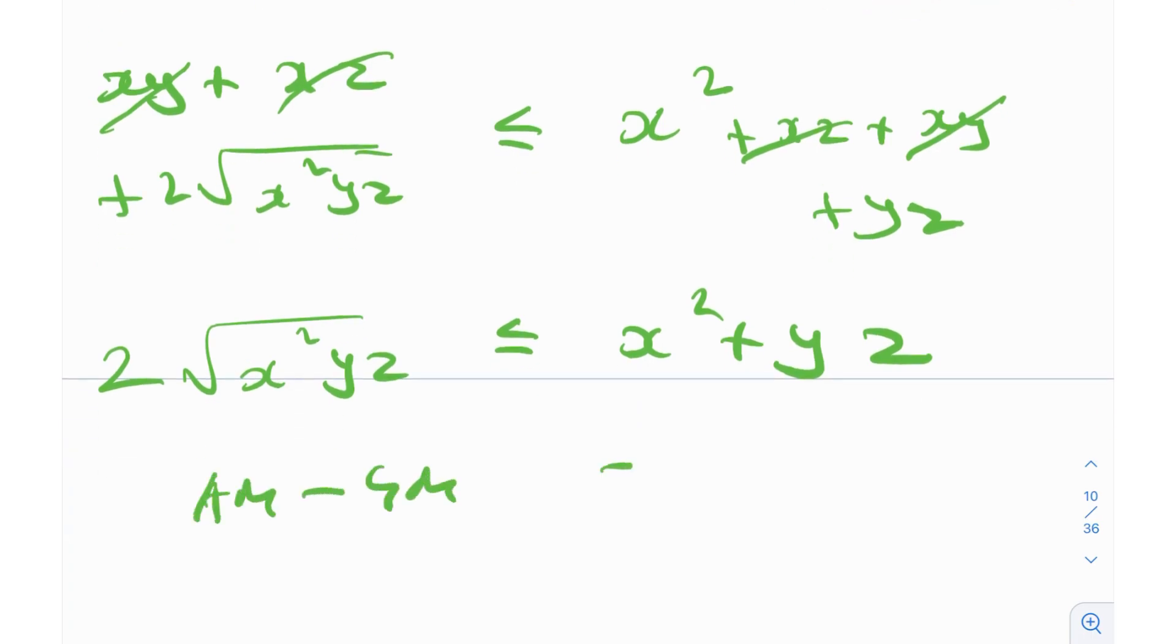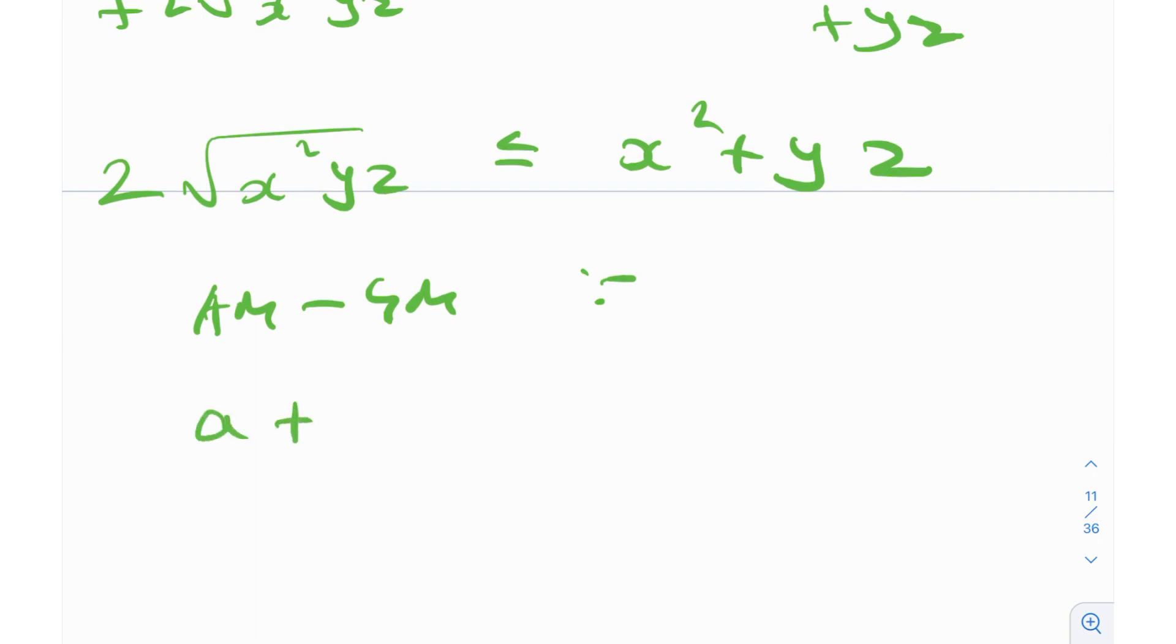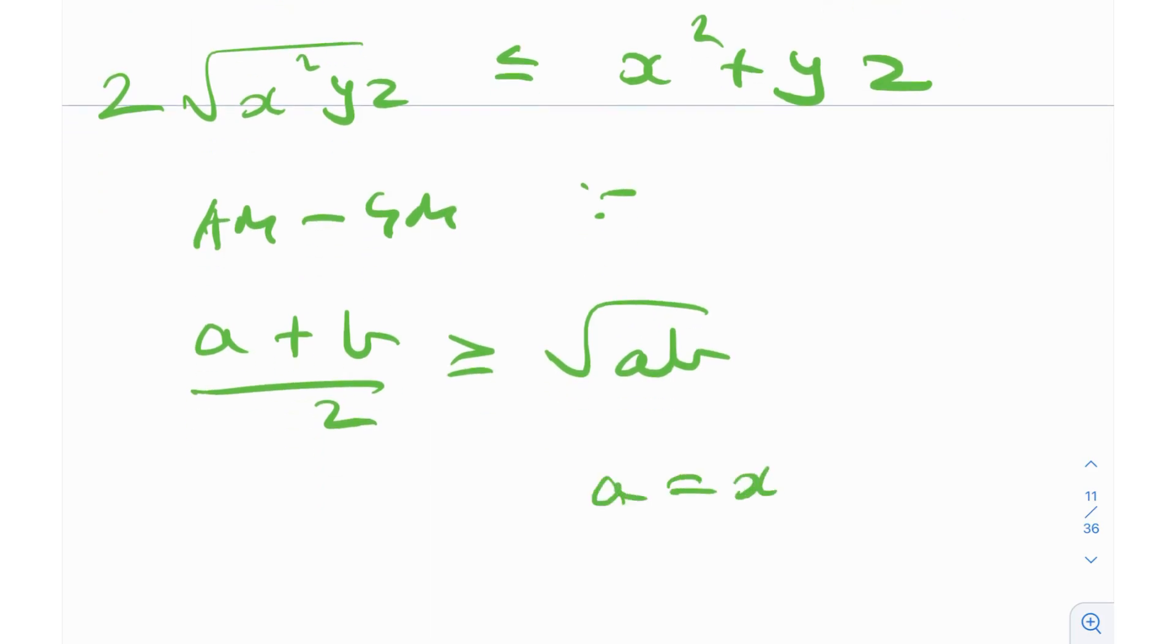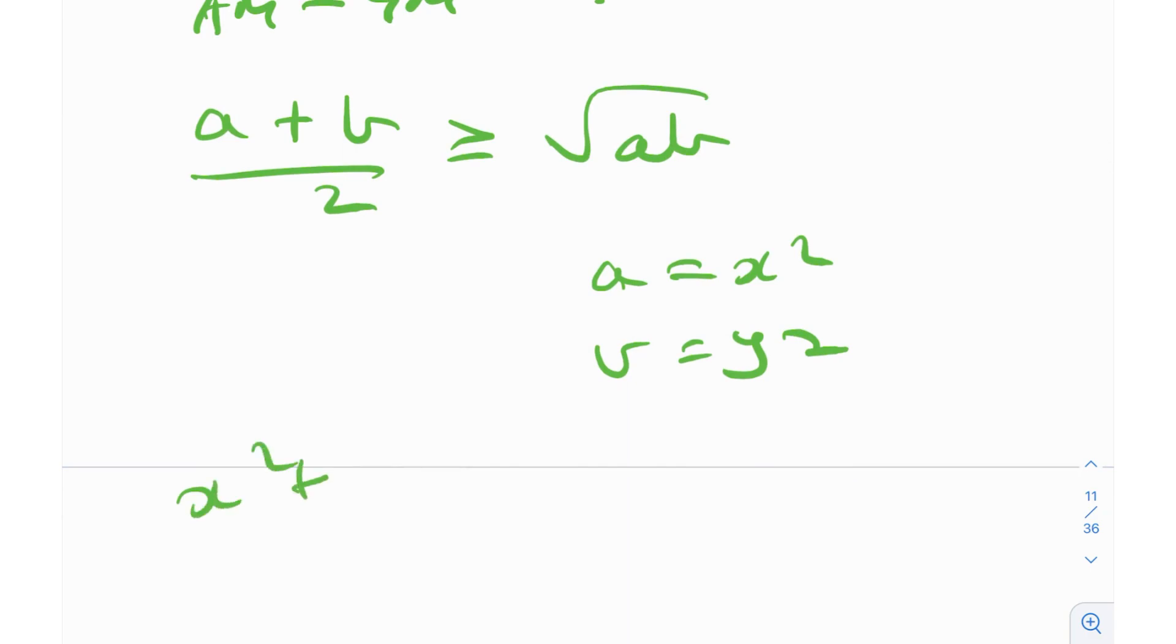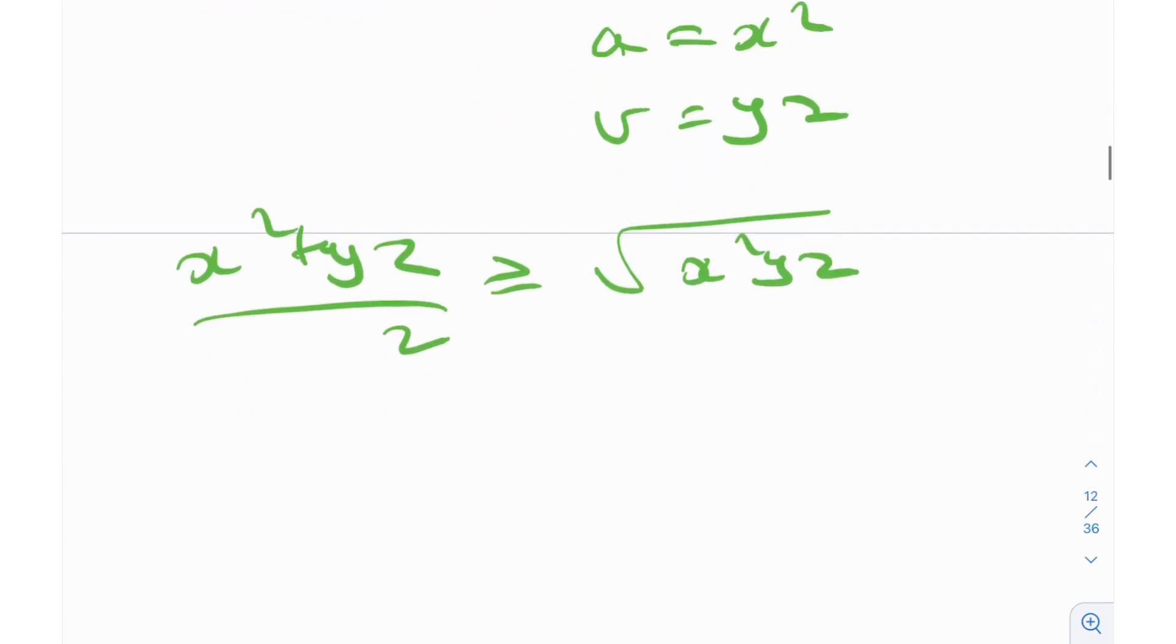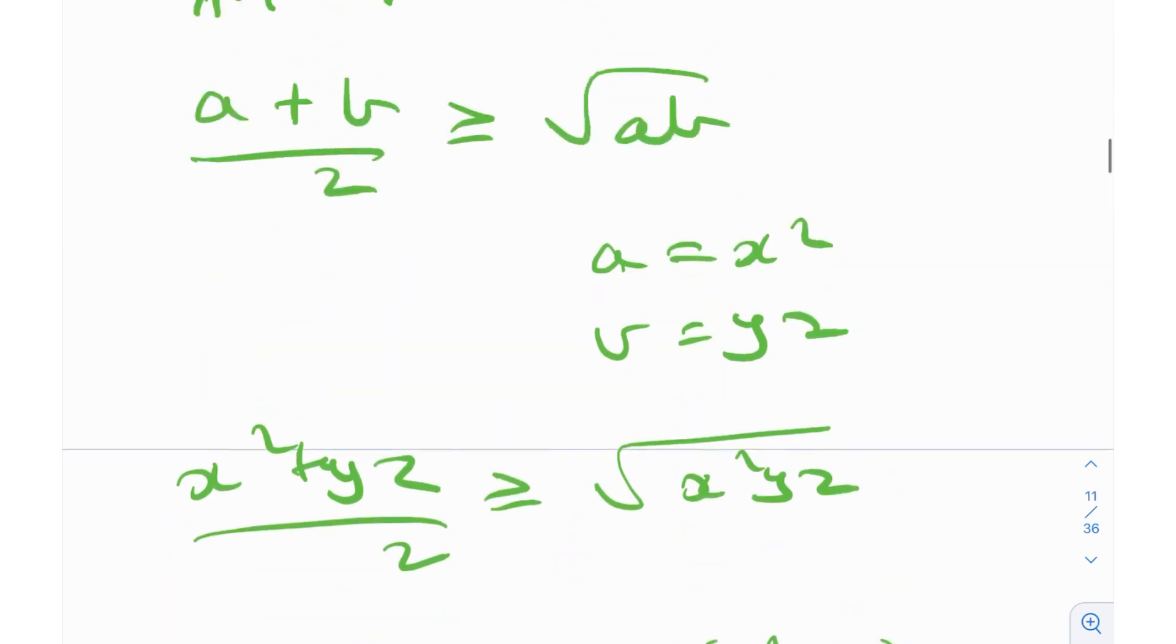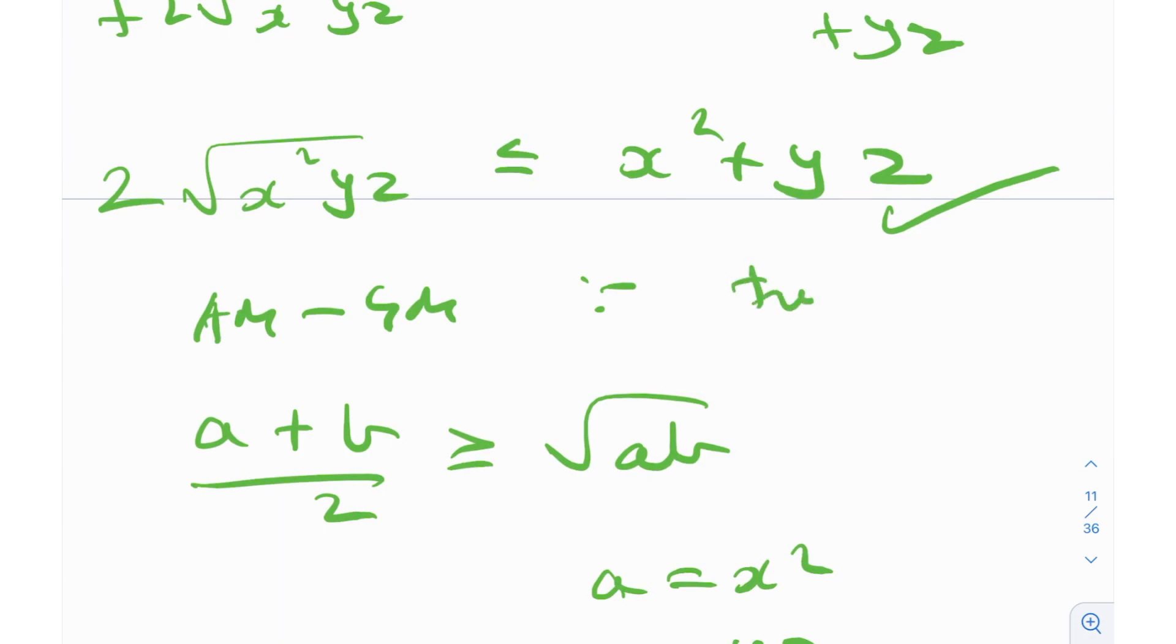If you're wondering how this can be proved, it is very trivial by AMGM. AMGM. So what does AMGM say for any two numbers, positive numbers, A plus B? A plus B by 2 is greater than or equal to root AB. If I take A is equal to X square and B is equal to YZ like we have over here, I'll get X square plus YZ by 2 is greater than or equal to square root of X square YZ or equivalently, twice of square root of X square YZ is less than or equal to X square plus YZ, which is what we have over here. So I can write that this is true by AMGM.